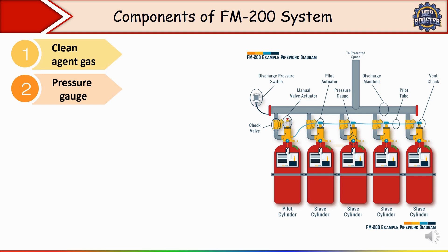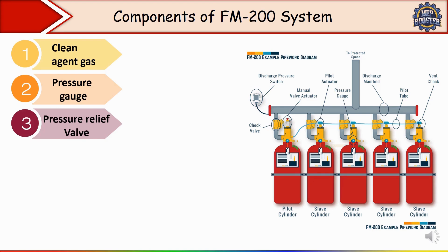The second component is the pressure gauge — a mechanical gauge that attaches to each FM-200 storage cylinder, displaying the pressure inside to help monitor whether the cylinder is fully charged and ready for activation. Regular pressure checks ensure the system is operational. Next is the pressure relief valve — a safety valve installed in the system to release excess pressure. Then there is the pilot line — a pneumatic or hydraulic line connecting the primary cylinder to secondary cylinders in a multi-cylinder system. When the primary cylinder is activated, the pilot line opens the other cylinders, ensuring simultaneous discharge of FM-200 gas.